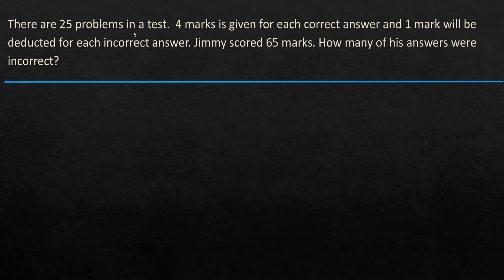The same problem—there were 25 problems in a test. 4 marks is given for each correct answer. And 1 mark will be deducted for each incorrect answer. Jimmy scored 65 marks. How many of his answers were incorrect? We know that there are two unknowns in this. That is the number of correct answers and number of incorrect answers. So let's assume that number of correct answers be x. It could be any value, so we are assigning a generic value x. And then number of incorrect answers, we are assuming it to be y.